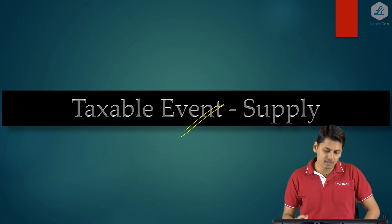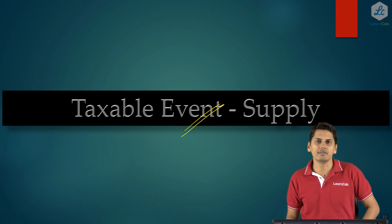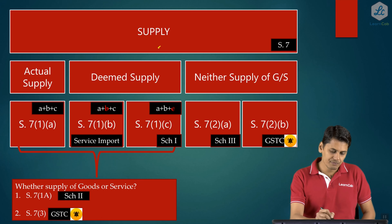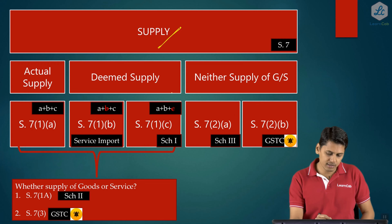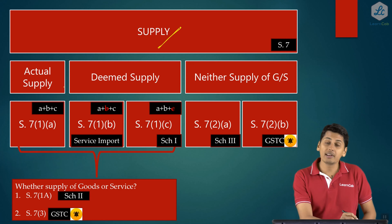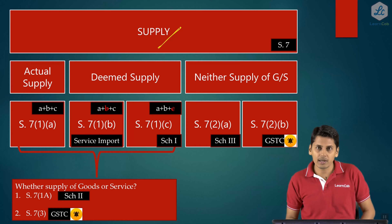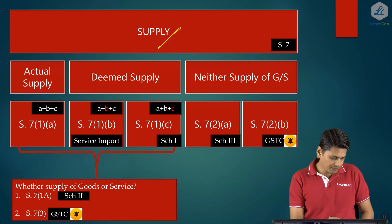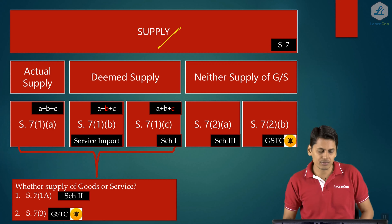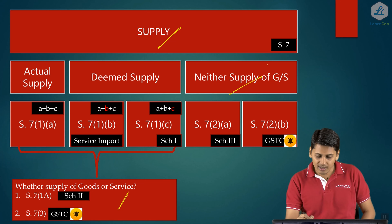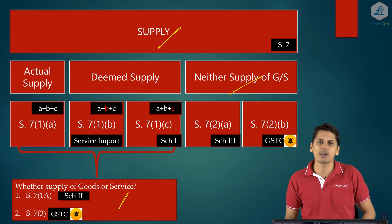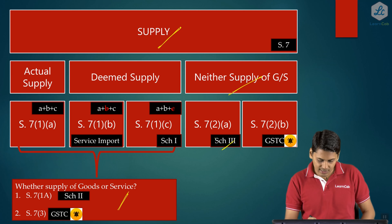The next change is in the chapter Taxable Event Supply. We have divided supply into four parts: Actual Supply, Deemed Supply — after being classified as either Actual or Deemed Supply — whether it is a Supply of Goods or Supply of Services, the classification being the third part. Certain transactions are neither a Supply of Goods nor a Supply of Services; those transactions are in Schedule 3, which contains eight activities.